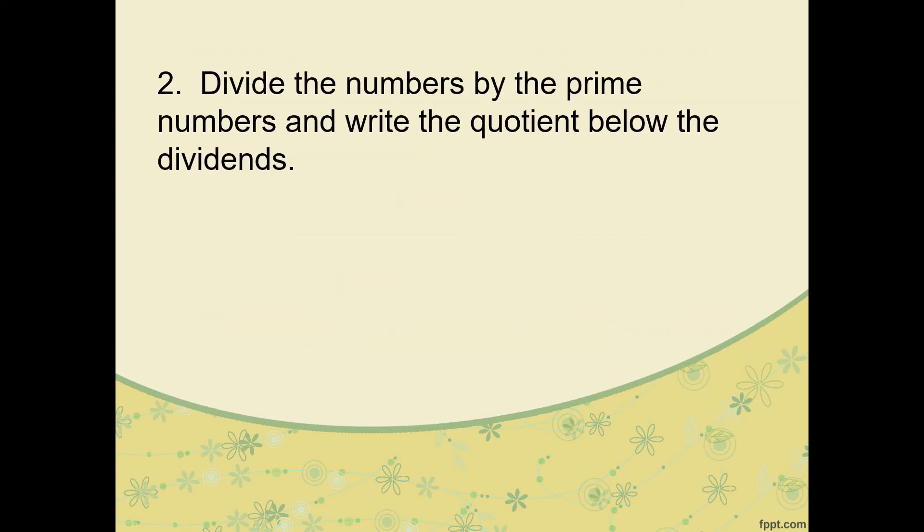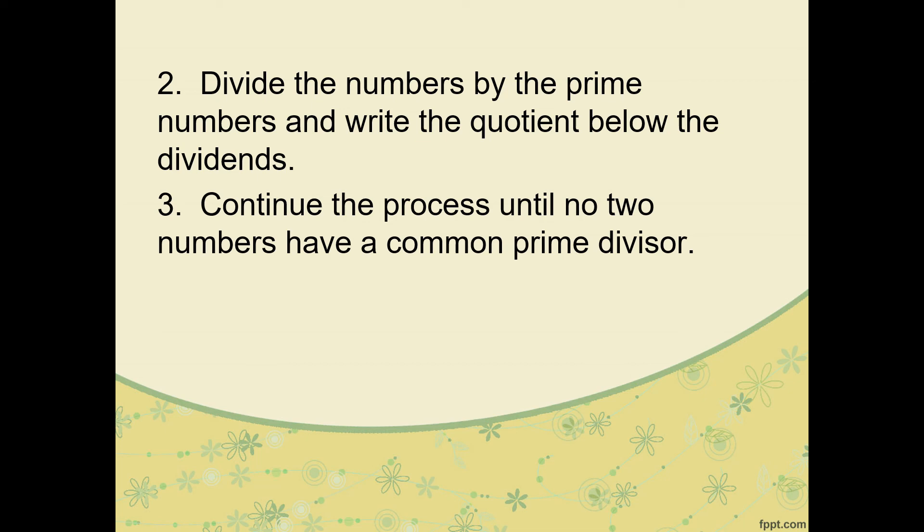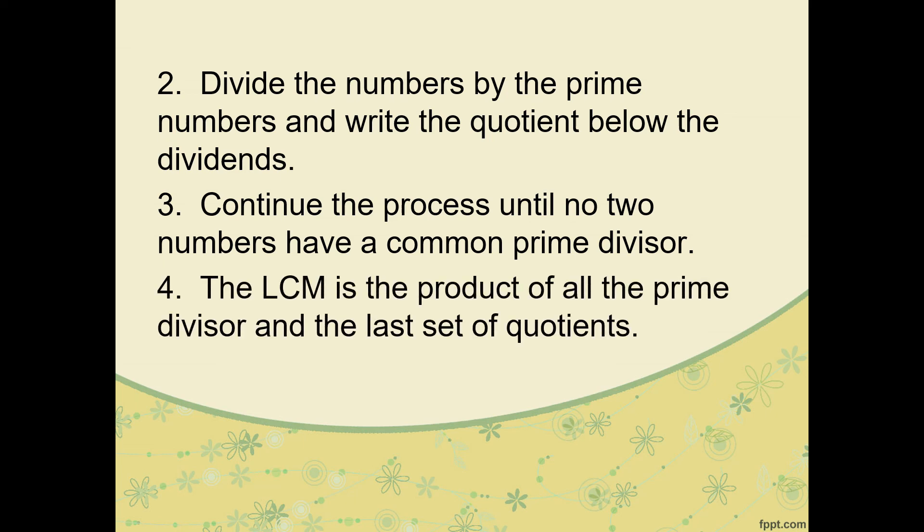Number two: divide the numbers by the prime numbers and write the quotient below the dividends. Number three: continue the process until no two numbers have a common prime divisor. The LCM is the product of all the prime divisors and the last set of quotients. We multiply everything on the outside, the L-shaped numbers I showed you.